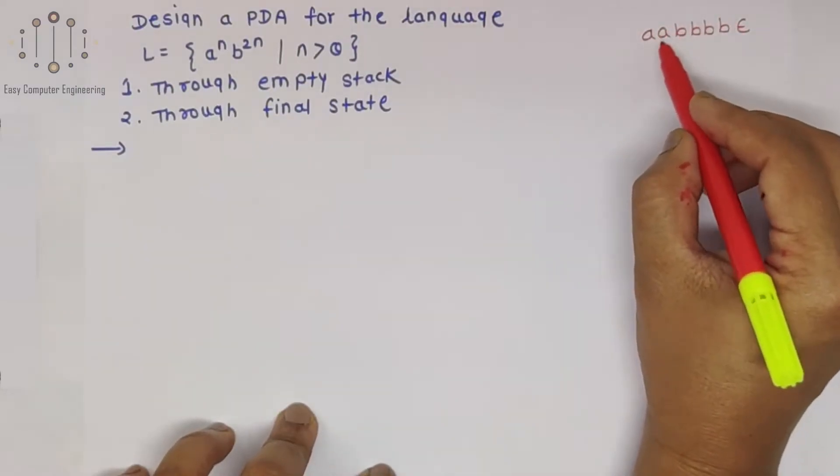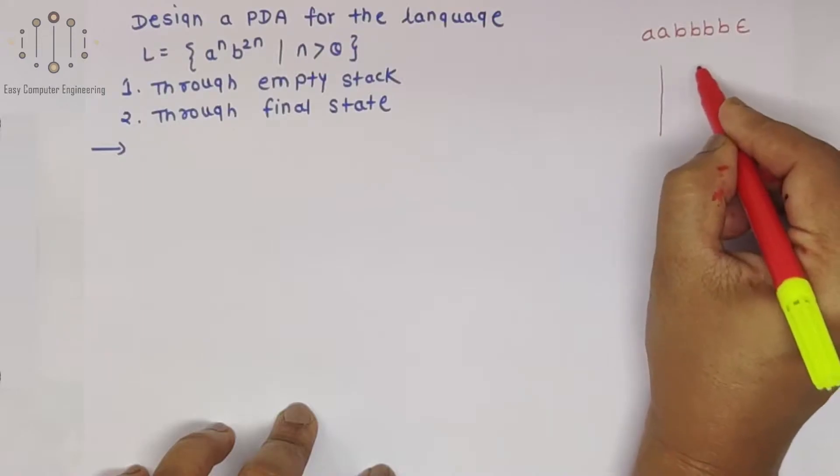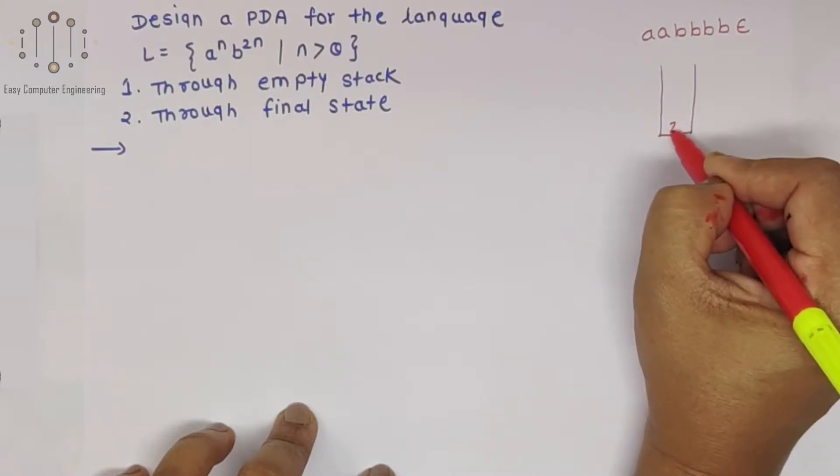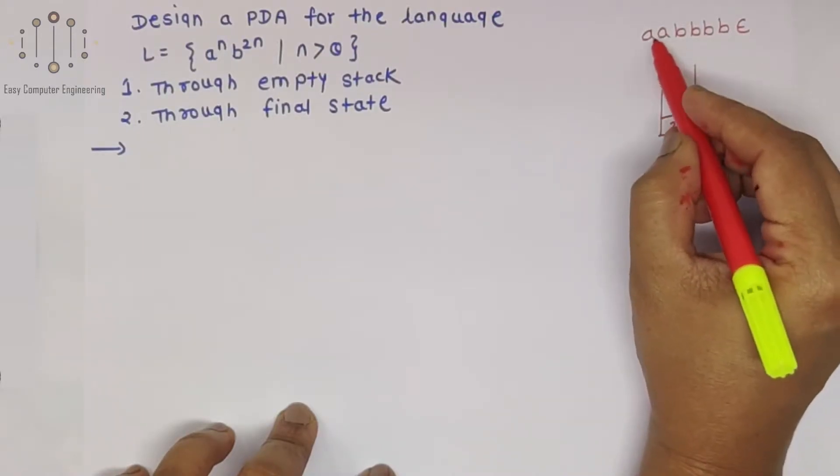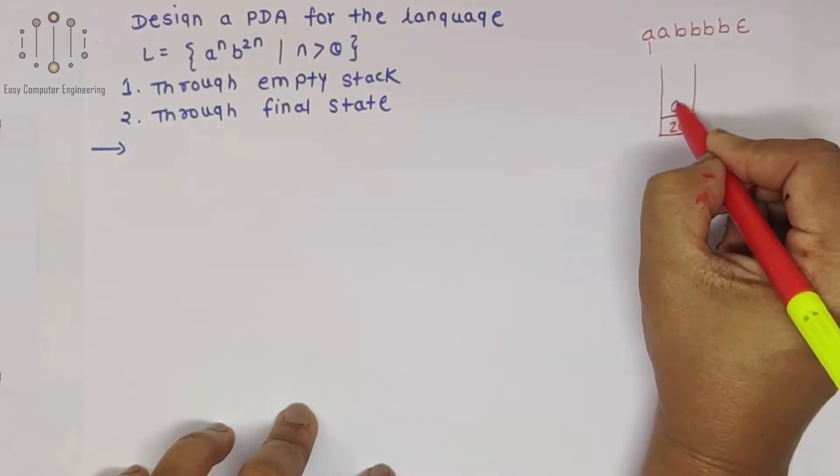We will push all A into the stack. Initially in the stack there is Z0, so we will push into the stack. First A, push it in.